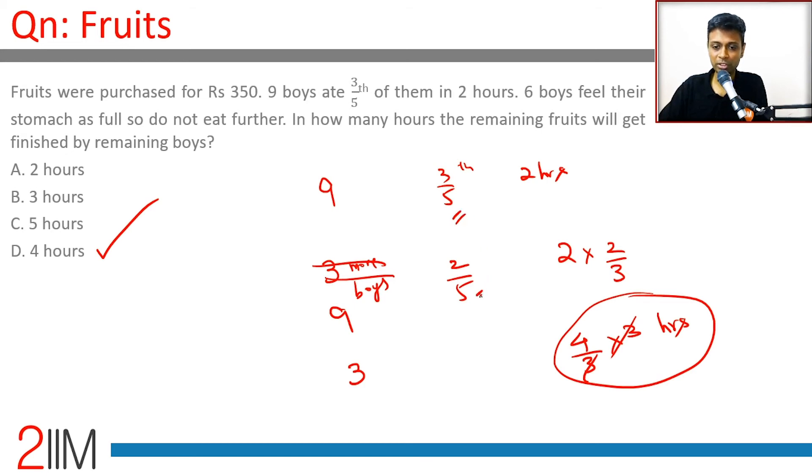3/5 is done, 2/5 is remaining. This ratio is 3 to 2. 60% they have finished, 40% is remaining. 2 × 40/60 or 2/3. Two-thirds of whatever they have eaten is remaining. 2 × 2/3 = 4/3. If all 9 boys had been there, they can finish it off in 4/3 hours, but only 3 boys are there.